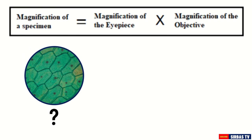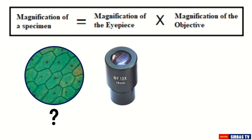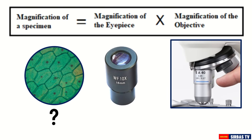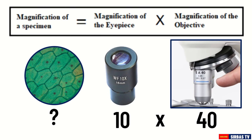The total magnification can be computed by multiplying the magnification of the eyepiece by the magnification of the objective. For example, what is the magnification of a plant cell if the eyepiece is 10x and the objective lens is 40x? We multiply 10 by 40, so the answer is 400 times. This means the specimen is magnified 400 times its actual size when seen under the microscope.